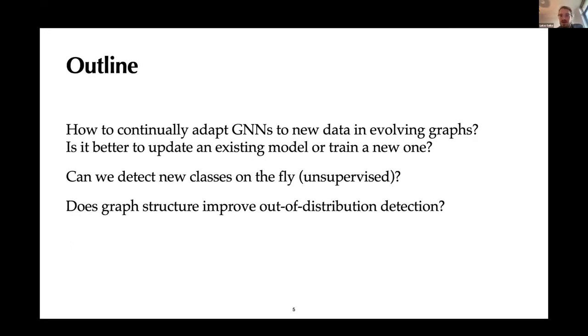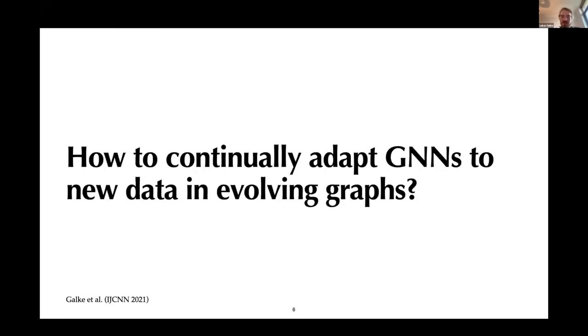So for this talk, I'm going to go through three topics and papers. The first one is a very basic starting point, like how do we do incremental training with graphs, but also focusing on the specific aspect of whether it's helpful to reuse an existing model for the next time step versus just train a new one from scratch. So basically, forward transfer. Then next, we will see how we can detect new classes. And last part will be about how we can use the graph structure to improve this out of distribution detection. Okay, let's start with the first topic.